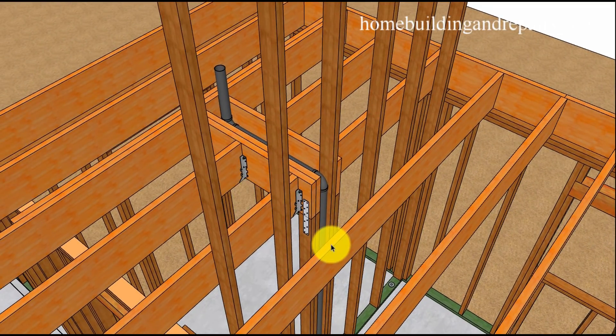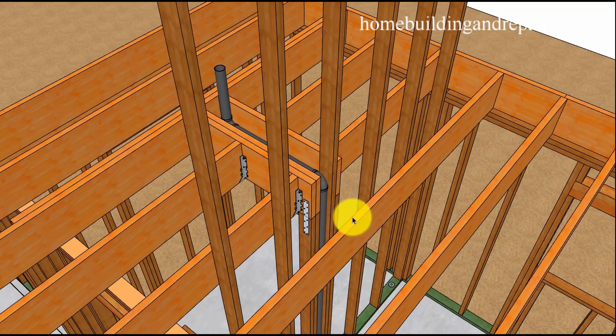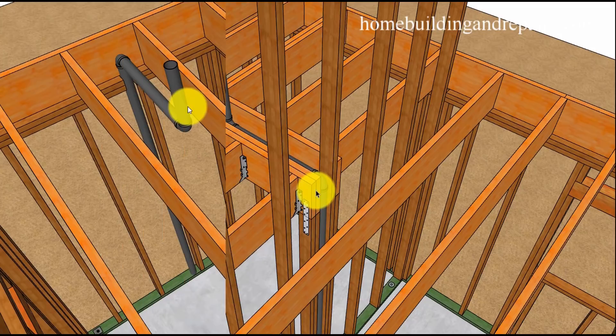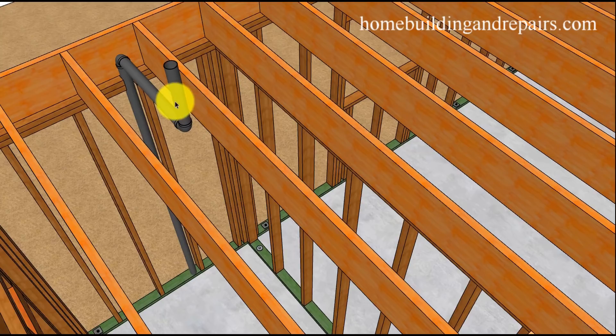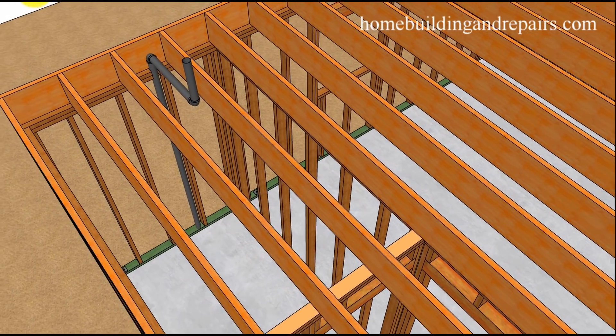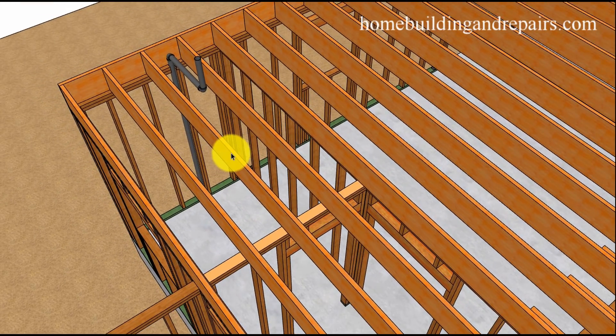But again you could always double up the joist over here and then run these over here with doublers to support the floor. Now I couldn't have ended the video with what it would have looked like if you had an experienced plumber and it was built like this from the beginning and nothing was going to be modified. Now the examples I'm providing you with would have been for some type of plumbing modifications and not the original construction.